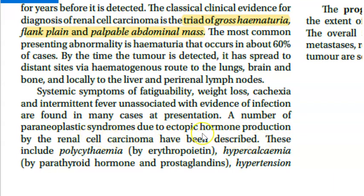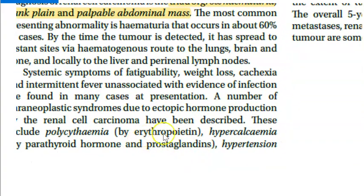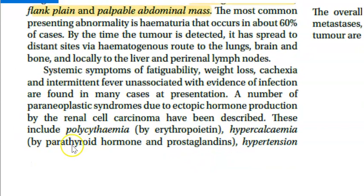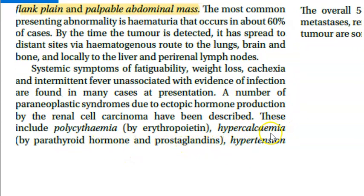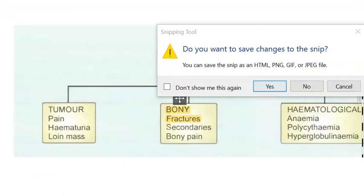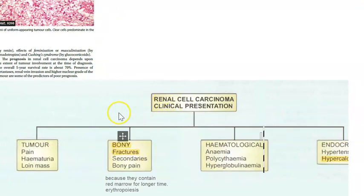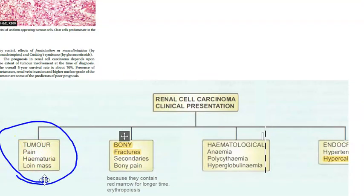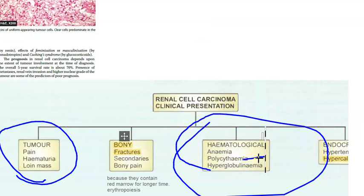Paraneoplastic syndromes can occur due to ectopic hormone production. Excess erythropoietin production can cause polycythemia. Parathyroid hormone and prostaglandins can cause hypercalcemia. Renin production can cause hypertension. Gonadotropins can cause feminization or masculinization. Glucocorticoid production can cause Cushing syndrome.